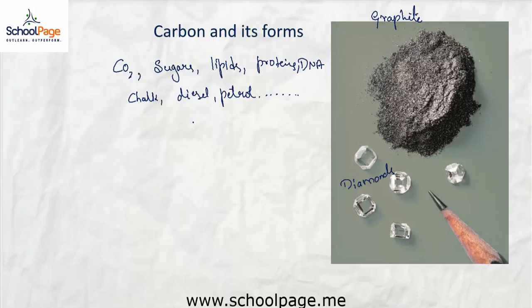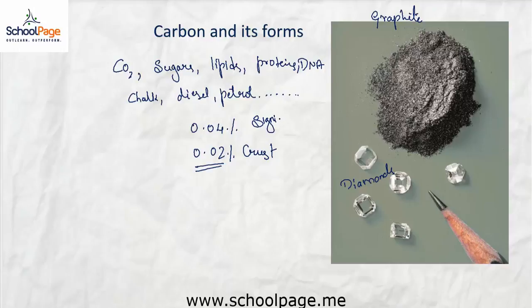The list grows — carbon forms compounds with so many different atoms, and hence carbon compounds are very common in nature. Recall that carbon occurs in nature in very small amounts: only 0.04 percent in the atmosphere and 0.02 percent in the earth's crust. But even with this limited availability, carbon is considered a significant element.